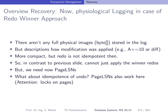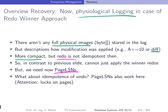Now let's change the assumptions and consider physiological logging in a redo-winners approach. Instead of full physical images, we store compact descriptions of how changes were applied — for instance using diffs or logical information. This is more compact than full physical images. However, redo is no longer idempotent: if a crash happens during redo, we must ensure redo is not applied multiple times. Without full physical images, we have to carefully check whether things work correctly, and without additional mechanisms they won't. We therefore need page log sequence numbers to make redo idempotent.